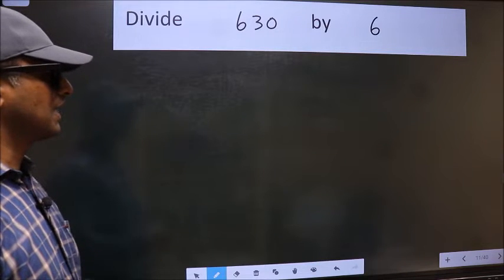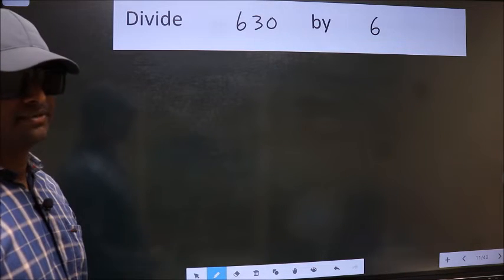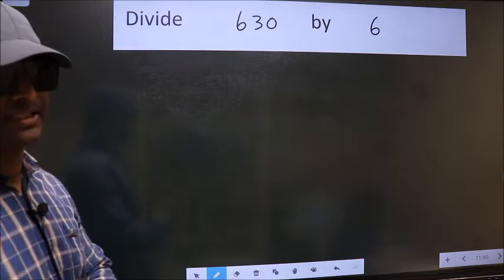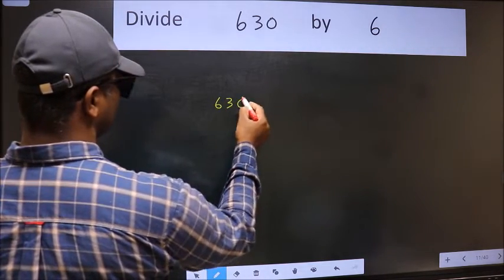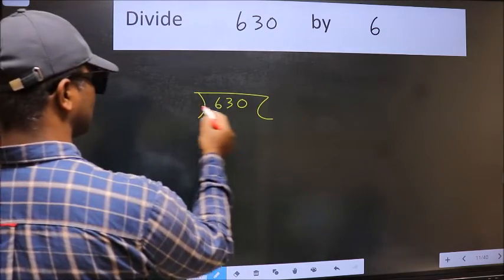Divide 630 by 6. To do this division, we should frame it in this way. 630 here and 6 here.